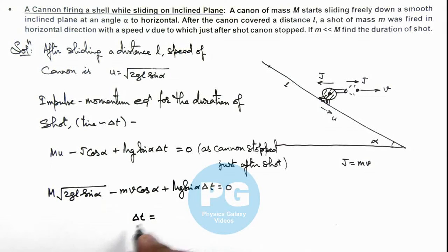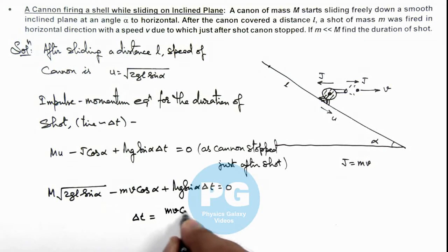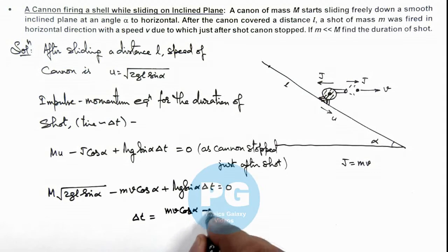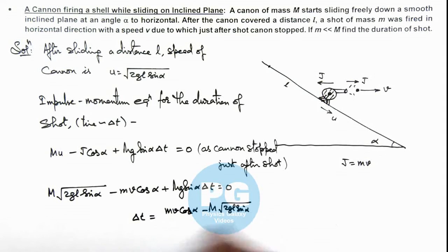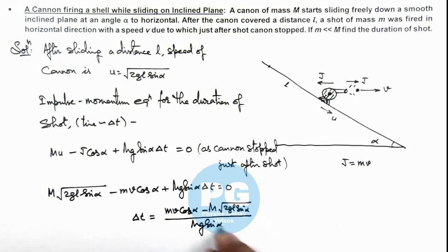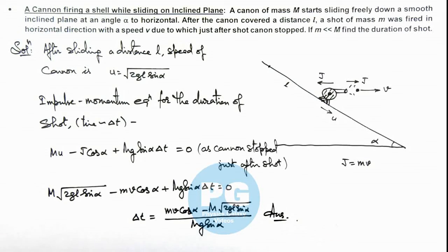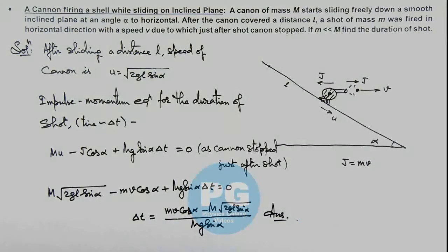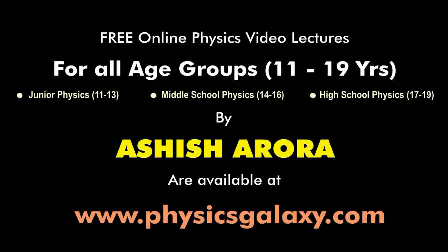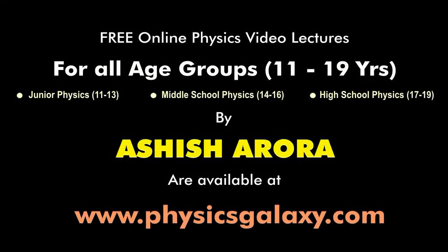The value of delta t is equal to (mv cosine alpha minus M times root of (2 g l sine alpha)) divided by Mg sine alpha. This is the final result of this problem. Thank you.